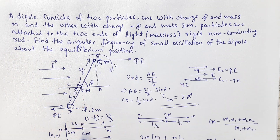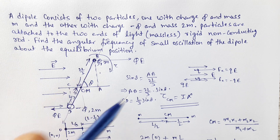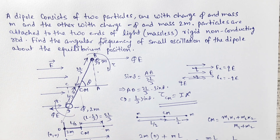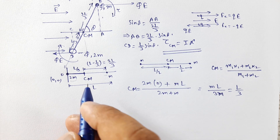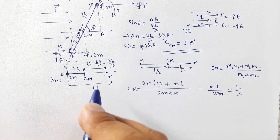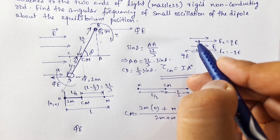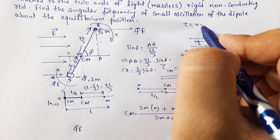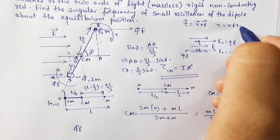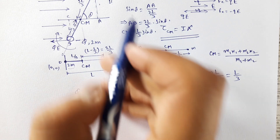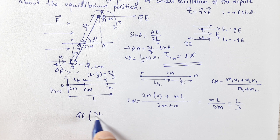Both torques act in the same clockwise direction. So the net torque is the sum of both contributions. The net torque tau equals the force qE times perpendicular distance AB, which is 2L/3 sin theta, plus qE times perpendicular distance CD, which is L/3 sin theta.